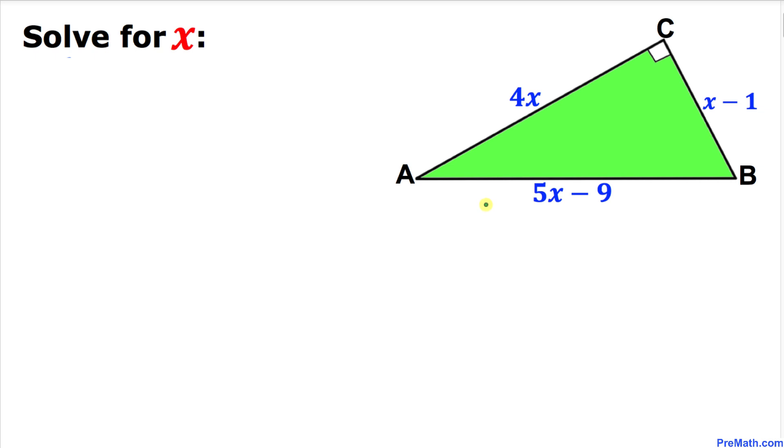Welcome to PreMath. In this video tutorial, we have this right triangle ABC as you can see in this figure, whose side lengths are 4x, x minus 1, and 5x minus 9. Now we are going to solve for x value.